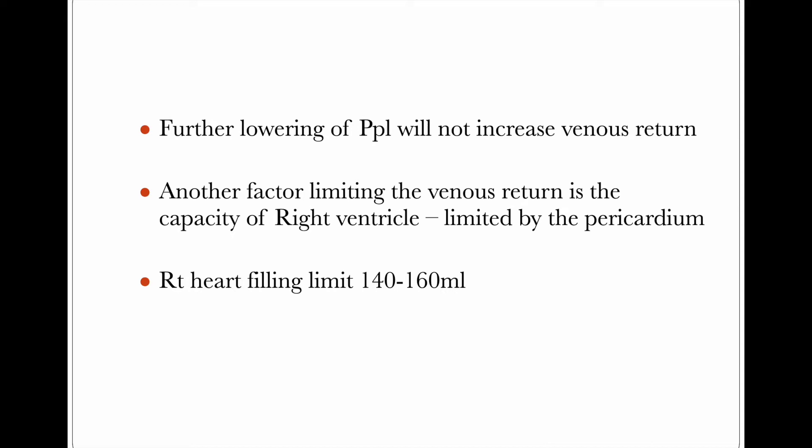Another factor limiting venous return is the capacity of the right ventricle. Even if you keep lowering pleural pressure more and more, the right heart filling limit is 140-160 ml because the heart is enclosed within the pericardium. There is a fixed volume that can fill the right ventricle. The right ventricle is less muscular than the left ventricle, distensibility is less, they share the interventricular septum, the right atrial free wall is less thick, and the volume cannot exceed approximately 140-160 ml.